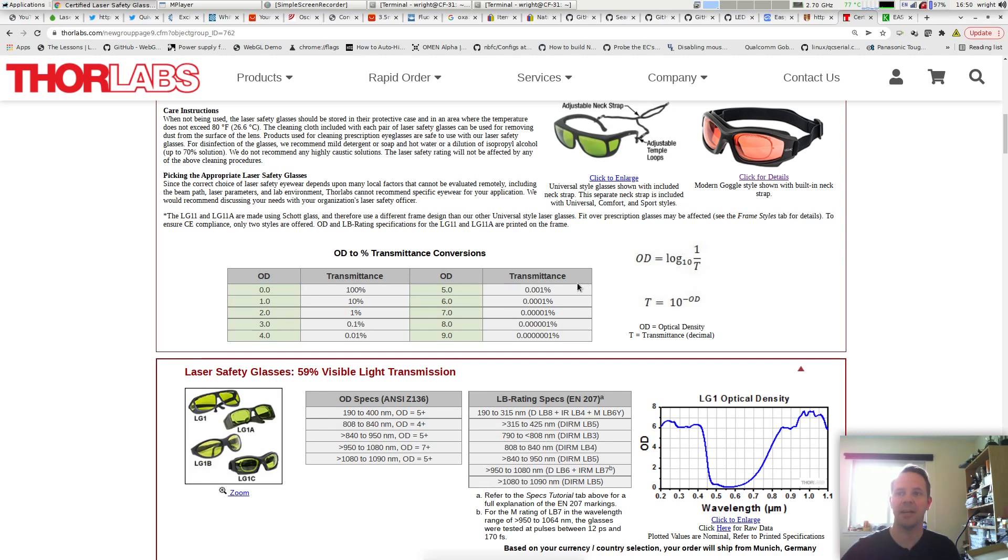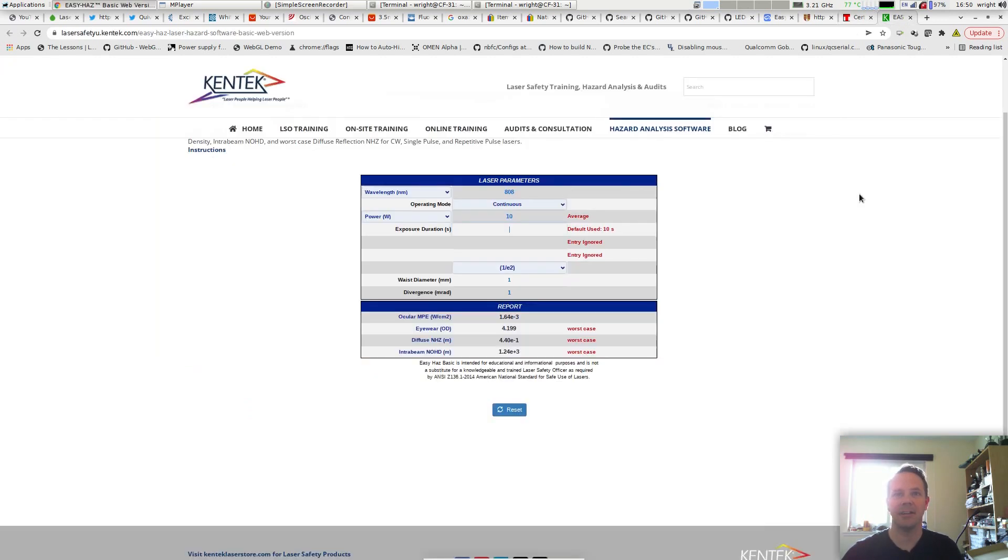Which is well within the maximum permissible exposure for the eye. You've got some math to do, but there are also some handy calculators out there, like on Kentec's website, and you just plug in the values that you want. In this case, I've plugged in 808 nanometers.